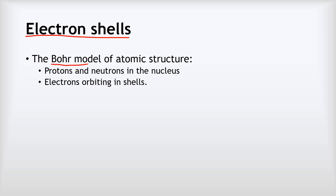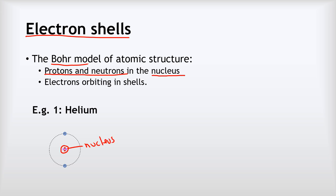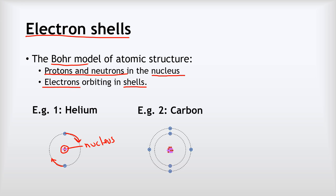So what are these electron shells? The Bohr model tells us that all atoms have a nucleus in the middle containing protons and neutrons. Orbiting around the nucleus are the electrons, in different levels that we call shells. Helium, for example, has just one shell of electrons with two electrons in it. Carbon is more complicated — it has two electron shells: an inside shell with two electrons, and an outer shell with four electrons.